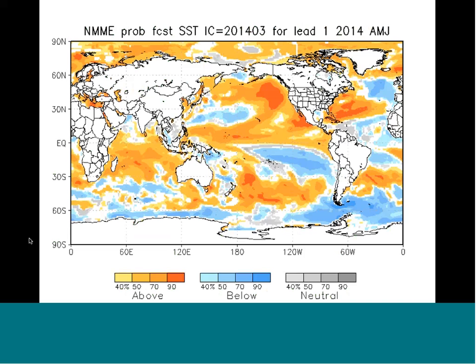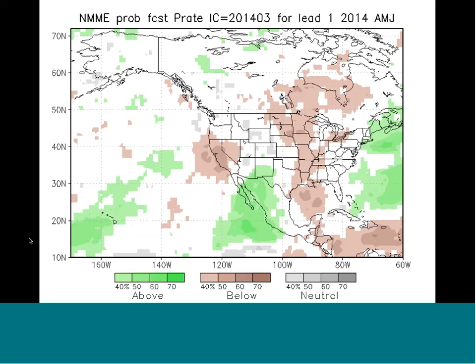The next slide shows the rainfall probability forecast for the same lead, same season, same forecast. It's producing relatively dry conditions in California and wet in Mexico, and then relatively dry in the central U.S.